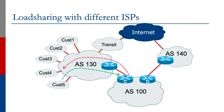What we want is return traffic from AS100 to customer 5 to go back through the direct link to AS130. For this, we need to get routing information about AS130 and its customers from AS130. So let's look at the router C configuration.